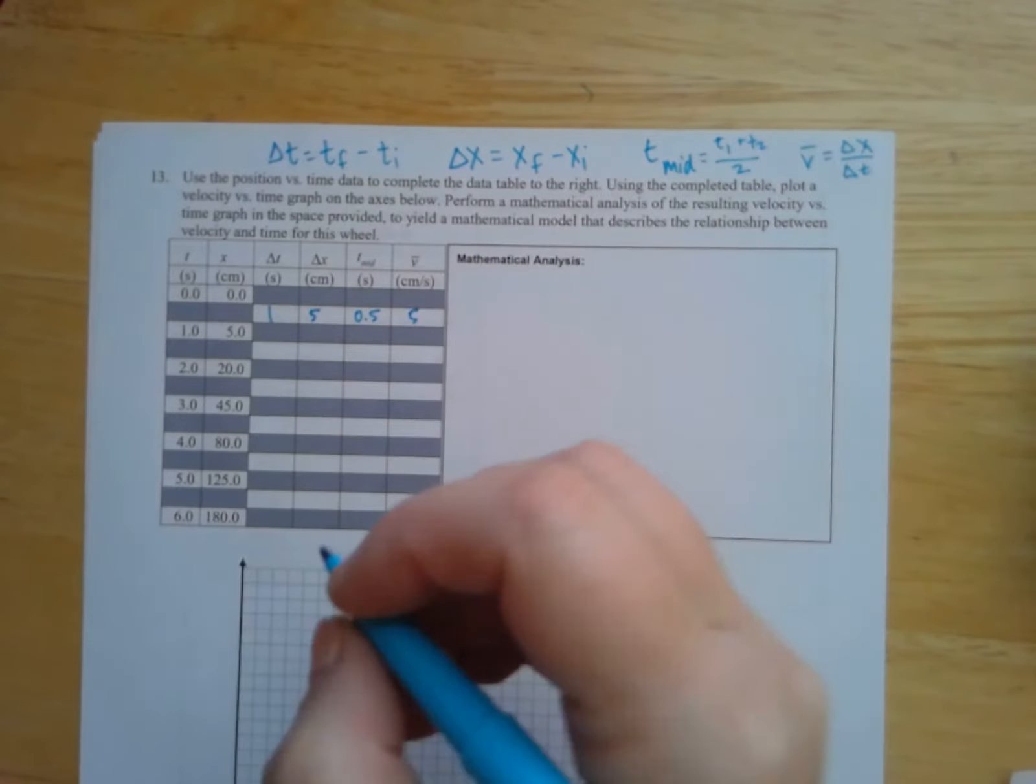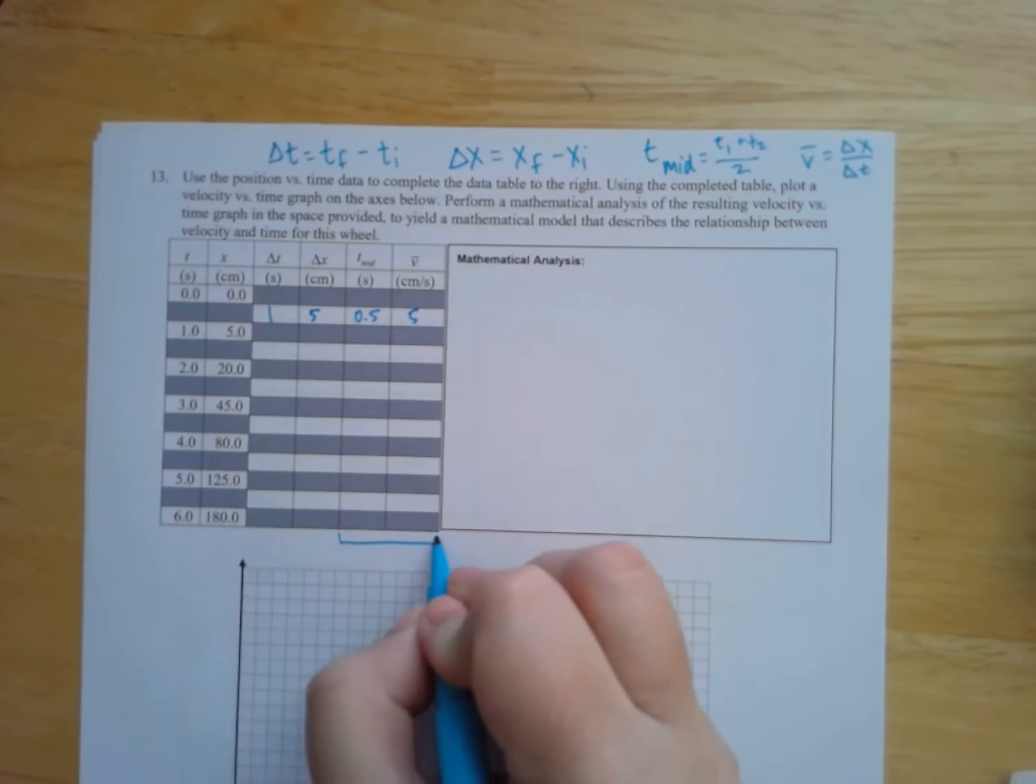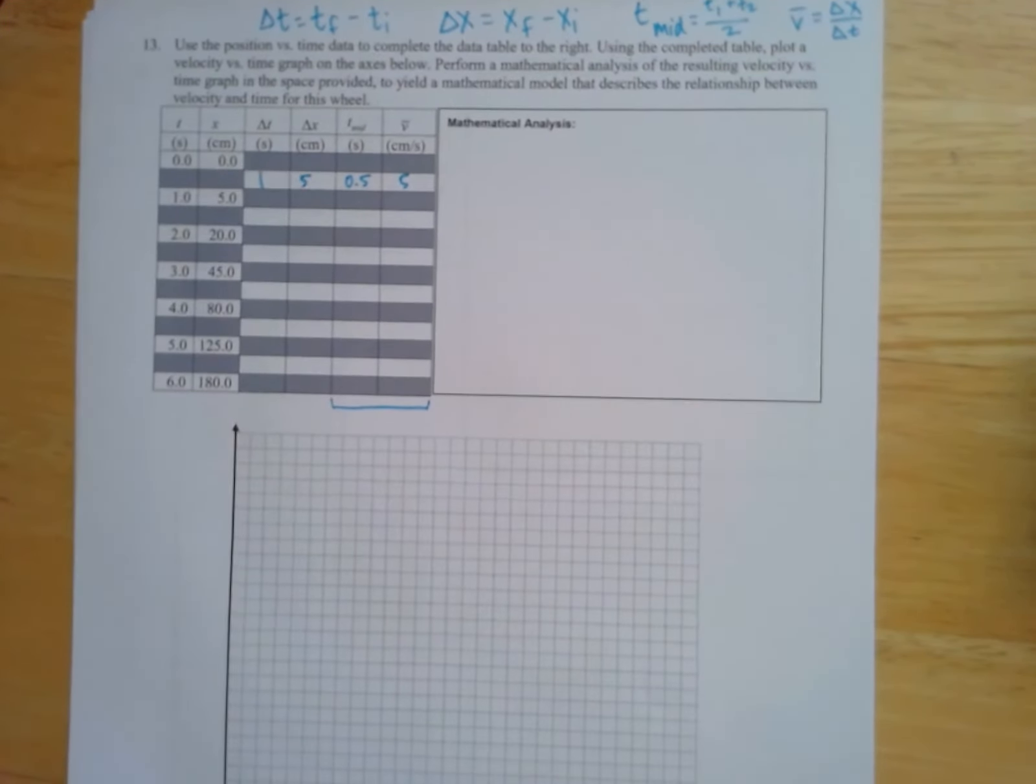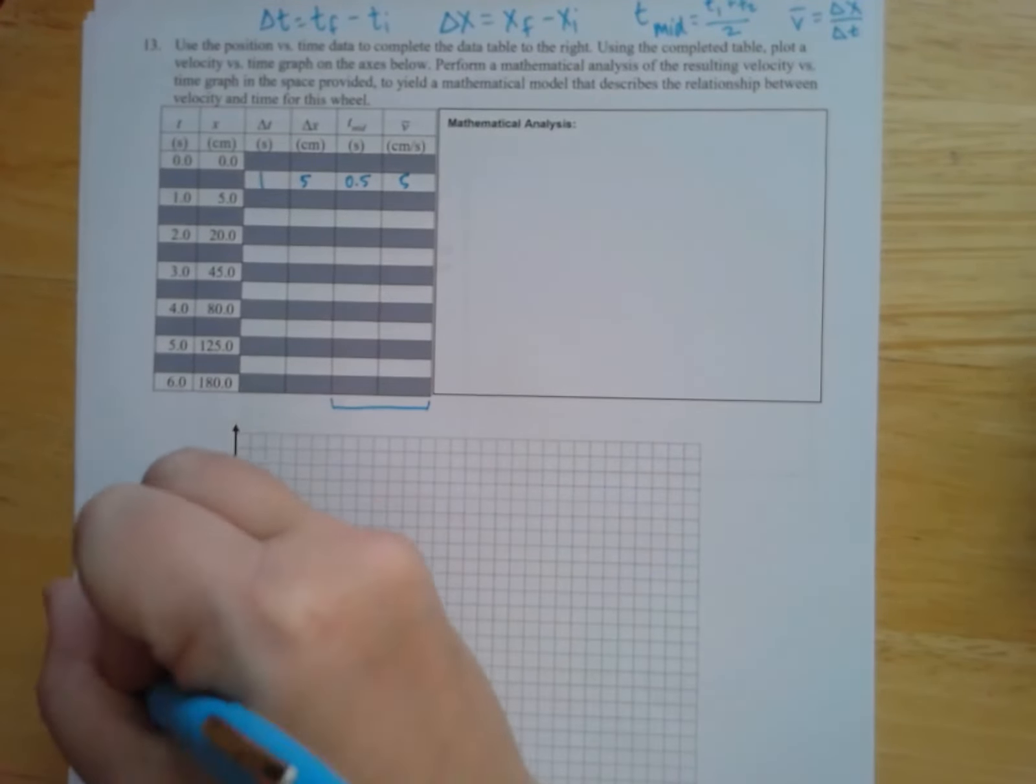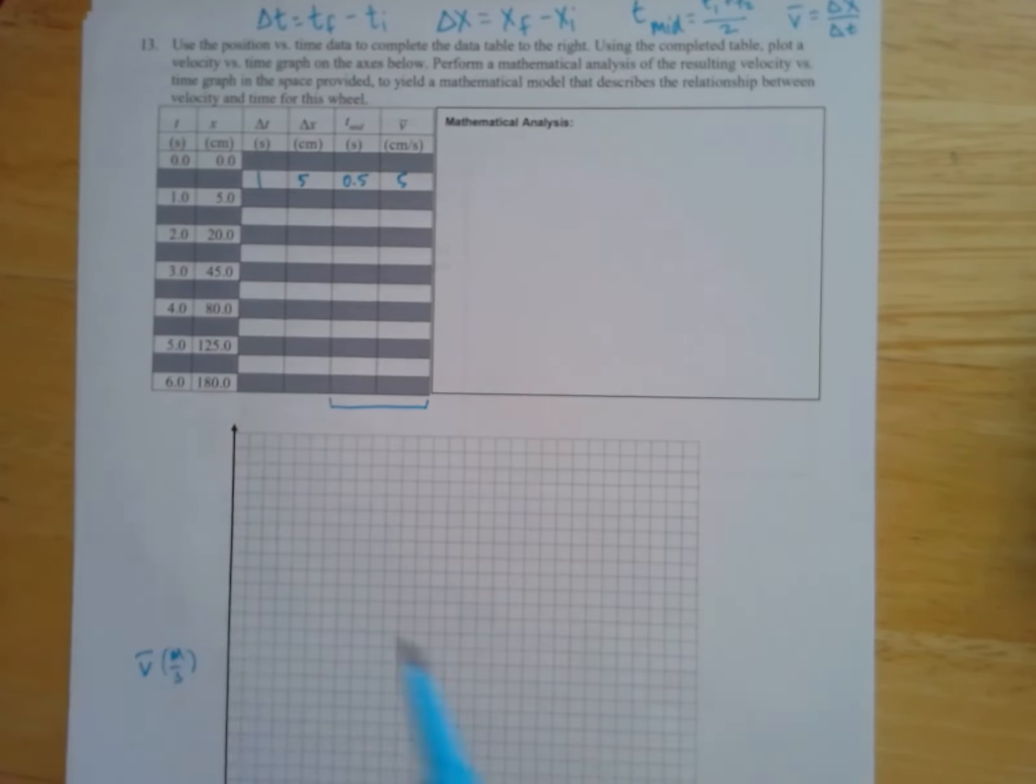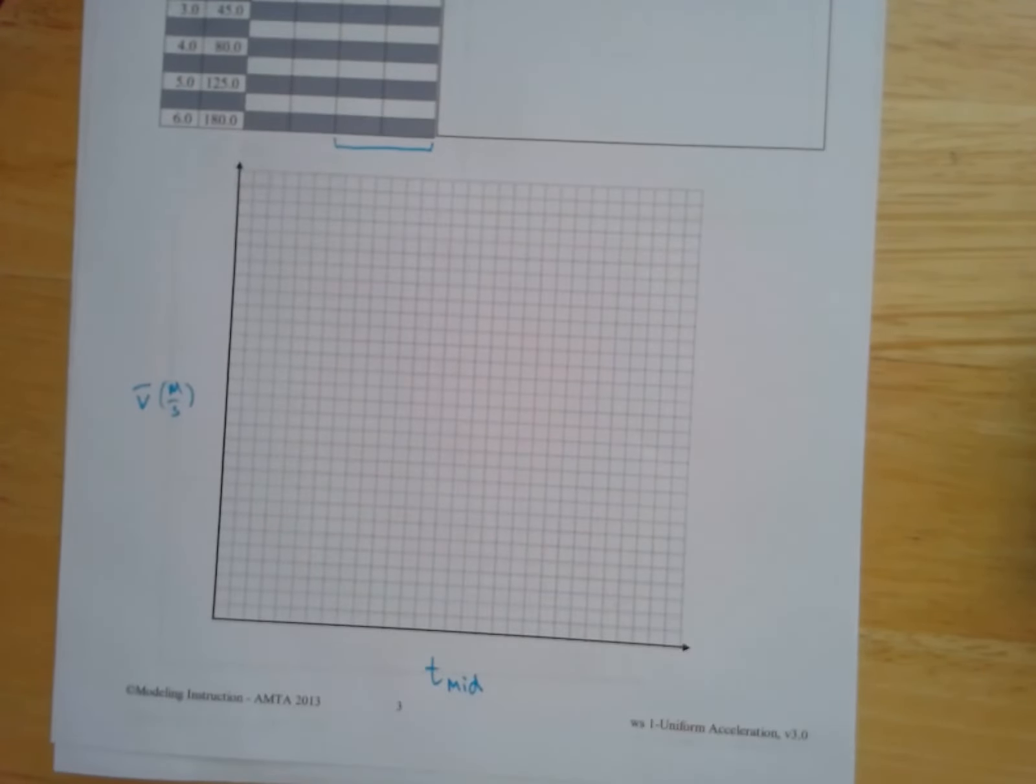And then what you need to do is use these two columns to make a graph. So we're going to put T mid down on the bottom and average velocity here on the side. So that's what our graph is going to look like.